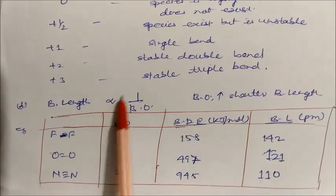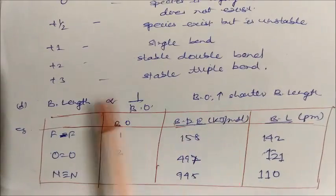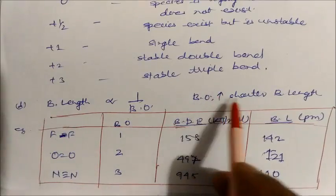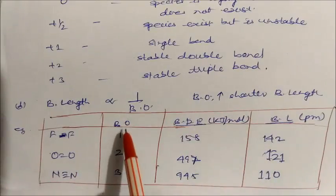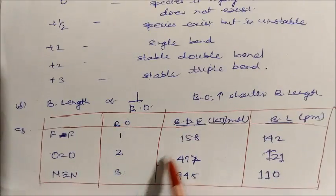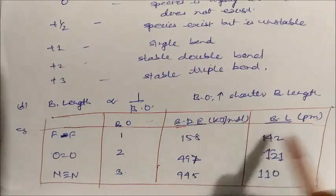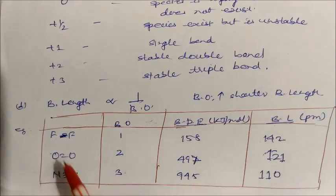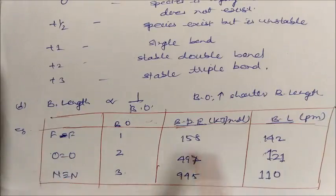Bond length is inversely proportional to bond order — higher bond order means shorter bond length. Bond energy is directly proportional to bond order. As bond order increases from 1 to 2 to 3, bond energy increases while bond length decreases. This can be compared across examples to verify the relationship between bond order, bond energy, and bond length.